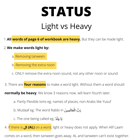Light or heavy: all words of page 6 of the workbook are heavy but they can be made light. We make a word light by removing Tanween and removing the extra Noon. We only remove the extra Noon and not any other sound. There are four reasons to make a word light. Normally a word is heavy. We know three reasons now: one, if a word is partly flexible like Yusuf; a word is Mudaf like Rabbi in Rabbil Alameen; or the one being called like Waladu in Ya Waladu. If a word has Aliflam on it, then light and heavy does not apply. Aliflam and Tanween cannot exist together.